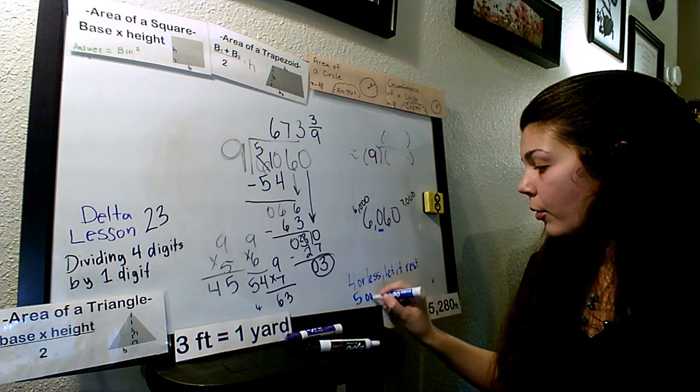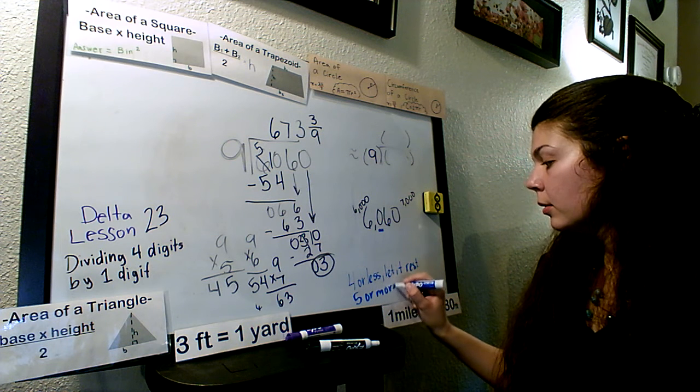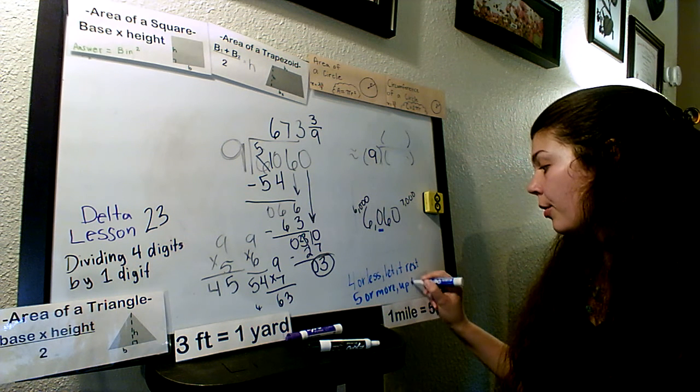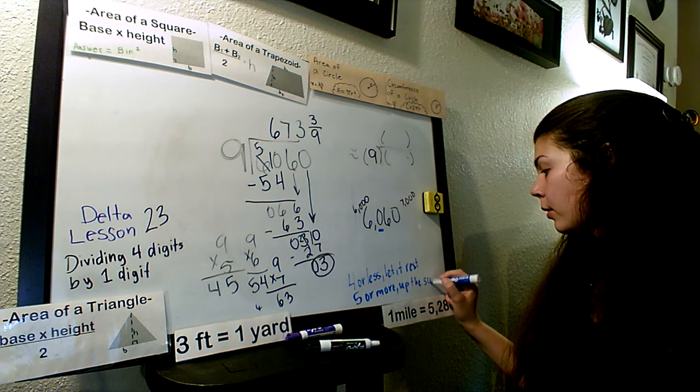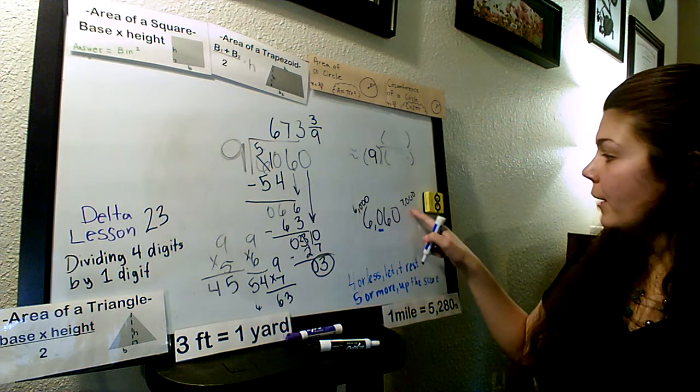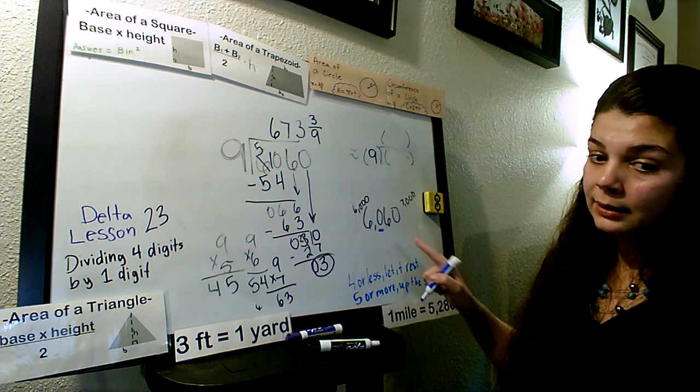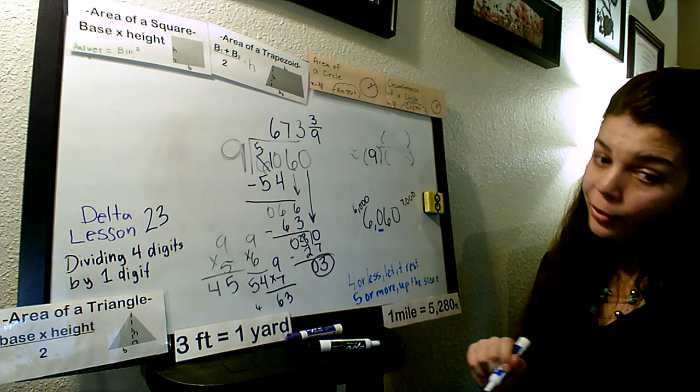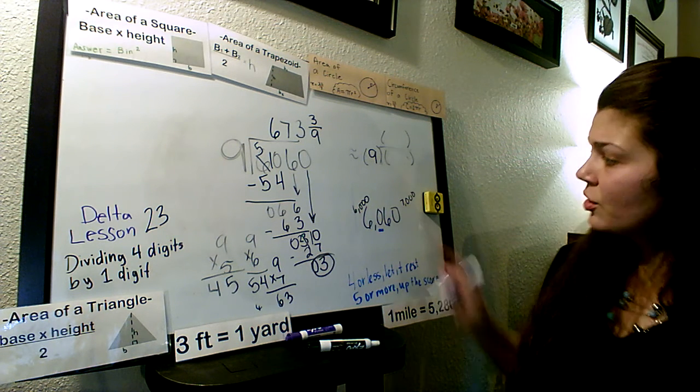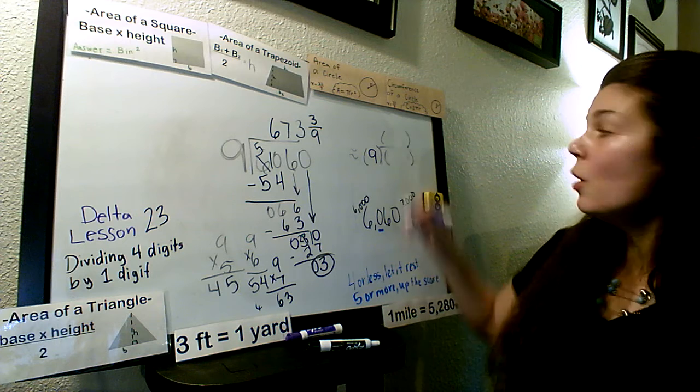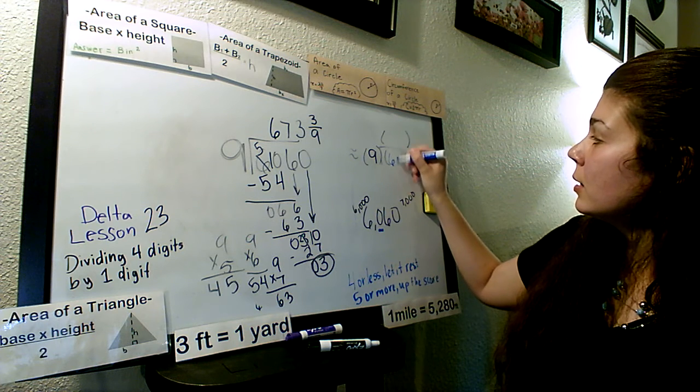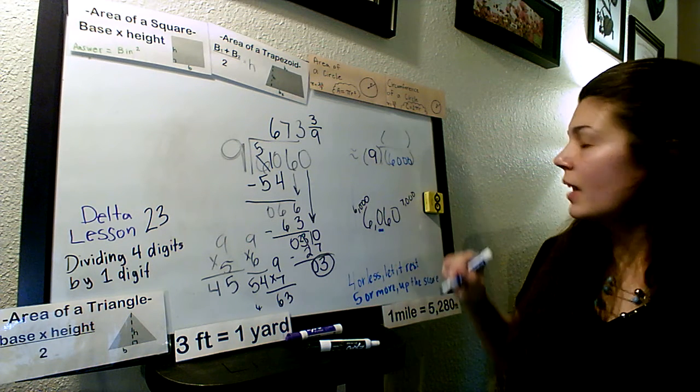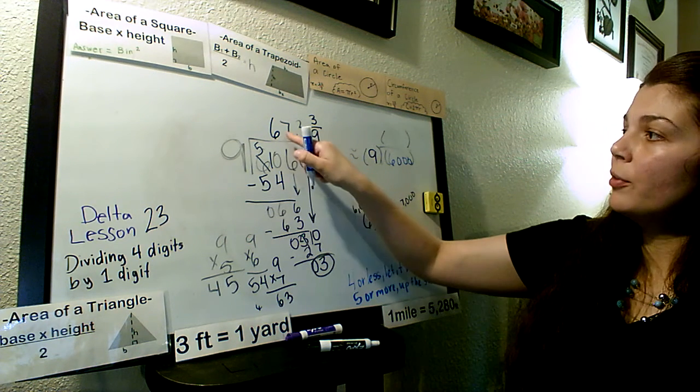Let it rest with the smaller number? Or is it 5 or more up the score? 5 or more up the score. 0 is 4 or less. Let it rest. So, we're going to go ahead and let it rest with 6,000.